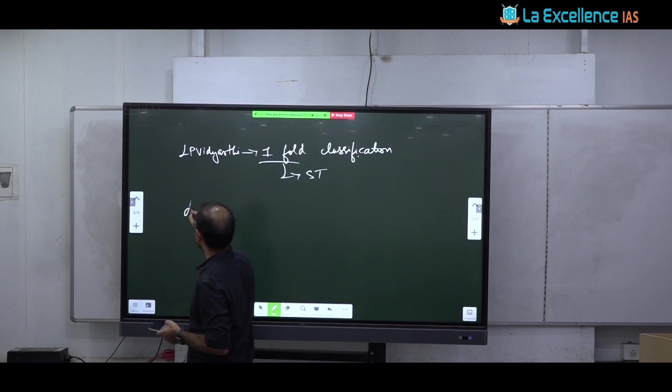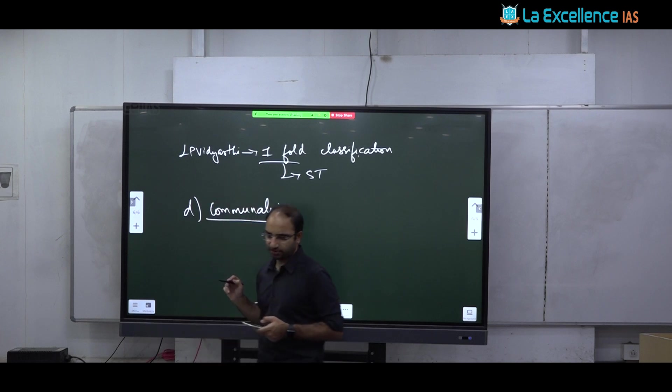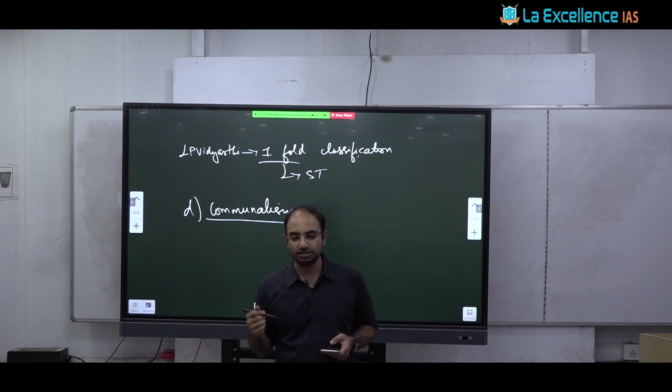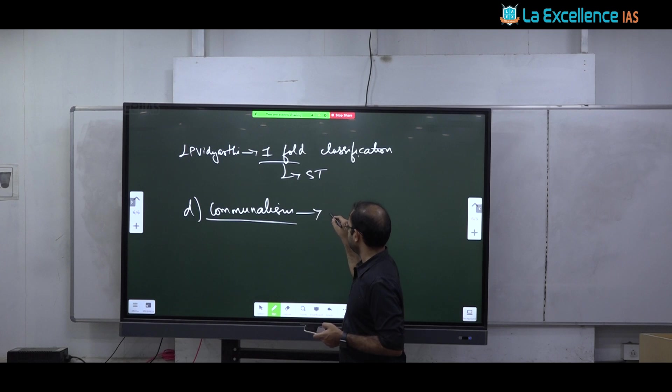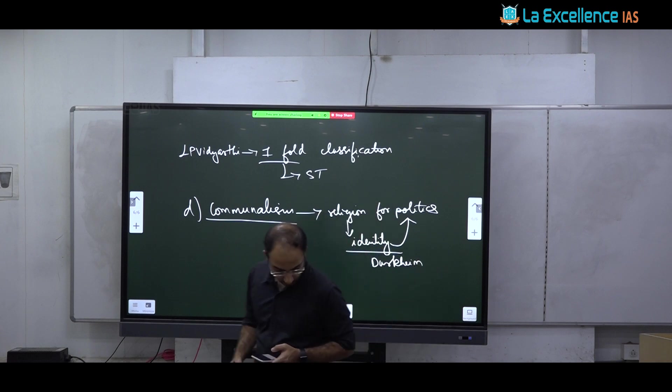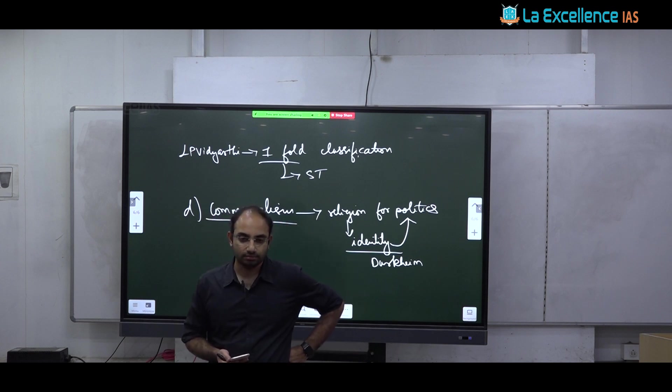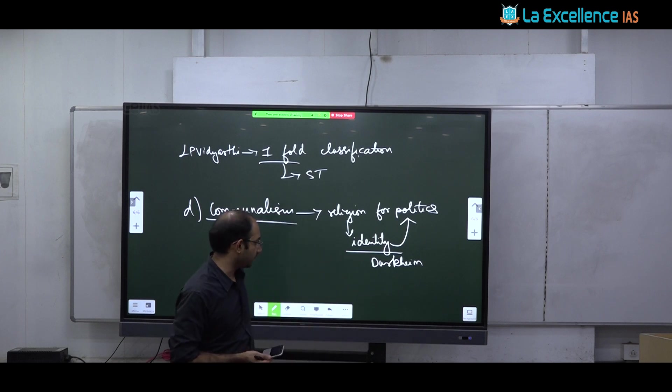D is communalism. This is again mostly what you learn in modern India. There is nothing much here specifically about anthrop. So you may add one of the thinkers that you know. But try to discuss how communalism is nothing but using religion for politics. And how religion when it is becoming part of identity, it is easily manipulated for political purposes. And here you can use Durkheim. That is all. And we can discuss the communal problem in India.